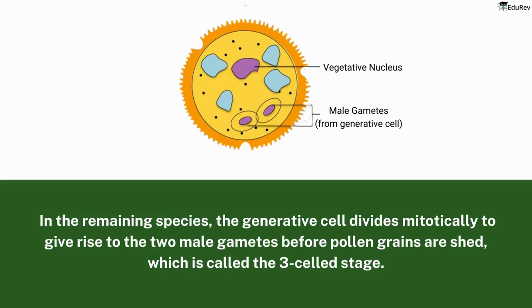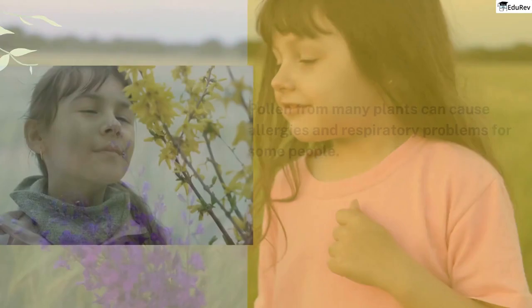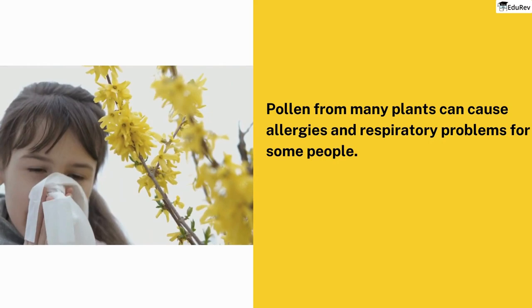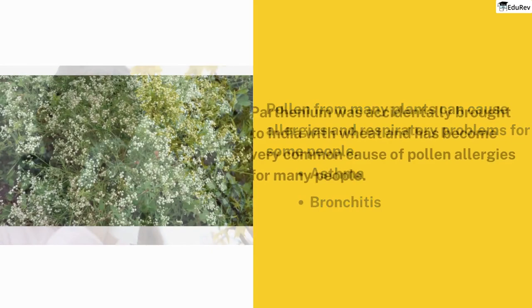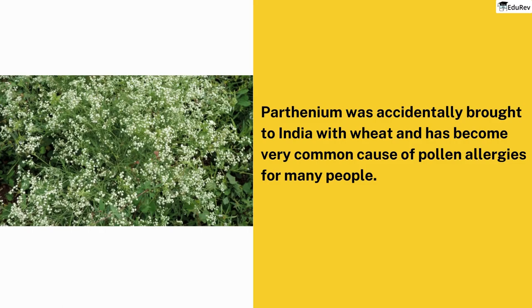Allergies by pollen grains: pollen from many plants can cause allergies and respiratory problems for some people, including conditions like asthma and bronchitis. One plant called parthenium, or carrot grass, was accidentally brought to India with imported wheat and has become very common there, causing pollen allergies for many people.